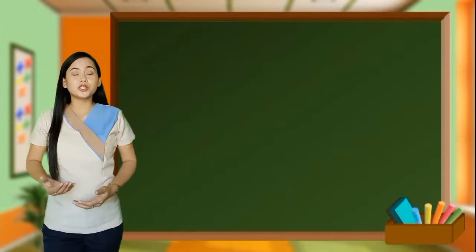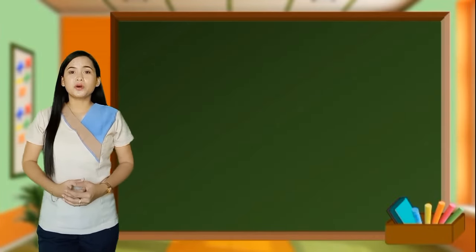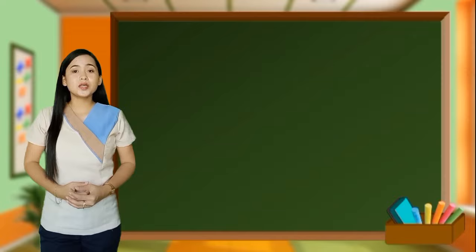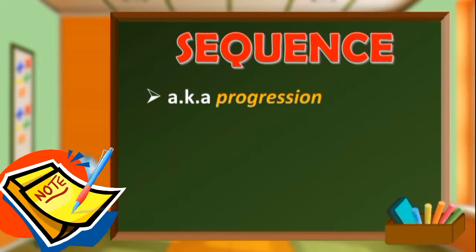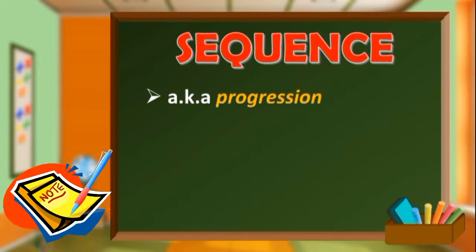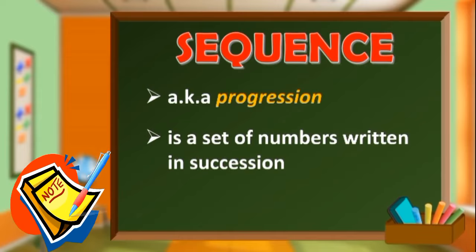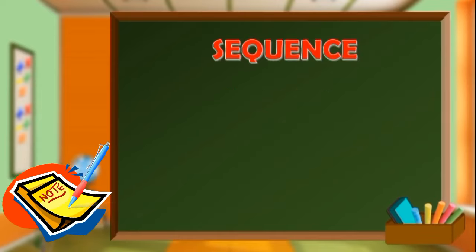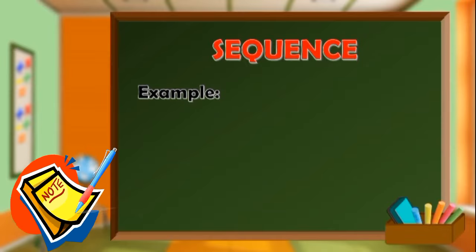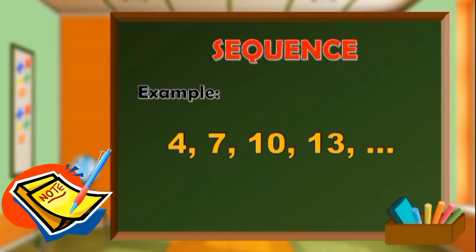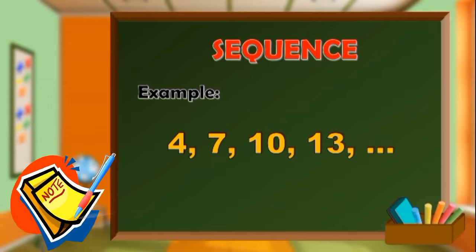Before I proceed to arithmetic sequence, it is important to know what a sequence is. Sequence is also known as progression. It is a set of numbers written in succession. Each number in the sequence is called a term. Say, for instance, in the sequence 4, 7, 10, 13, and so on,